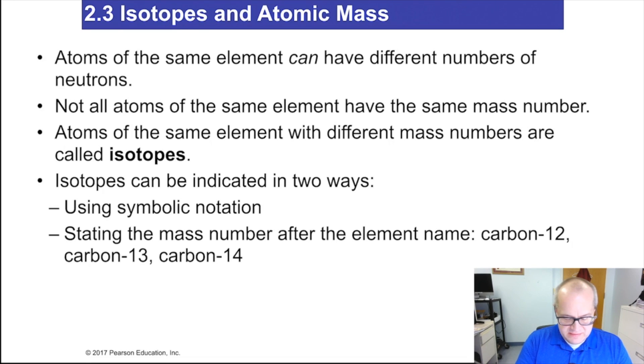Atoms of the same element, which means they have the same number of protons, can have different numbers of neutrons. That's a natural phenomenon. It happens with almost every element. Not all atoms of the same element have the same mass number.